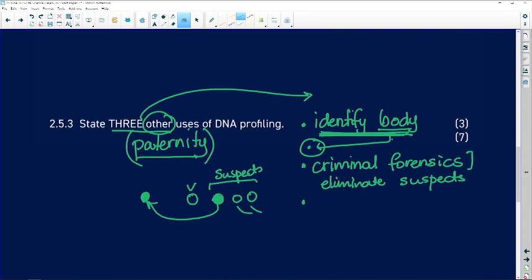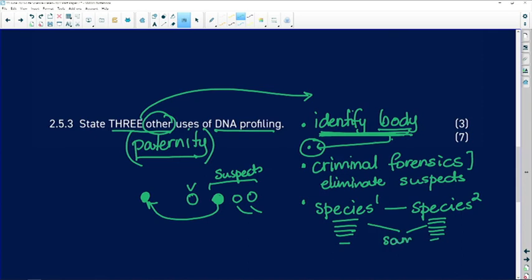Another interesting use of DNA profiling is we want to establish, for example, whether a particular species is the same as species one or is it the same as species two. Genetically, we can do a profile of species one, we can do a profile of species two, and we can see are they the same. If they're the same, then species one is the same as species two. If they differ, then we have two distinct species.